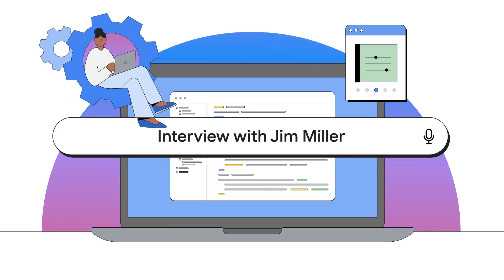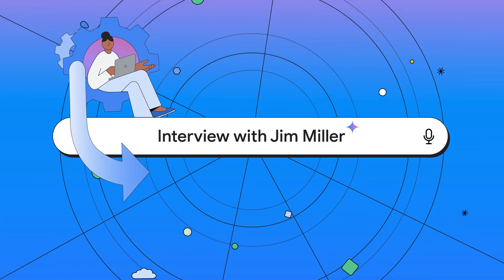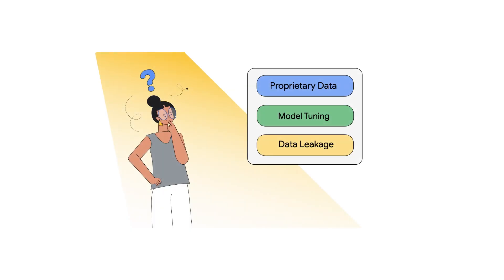Now that we've explored how we can use sensitive data protection to filter our LLM's responses, let's chat with Jim Miller, a Google Cloud security architect who created this Jupyter Notebook. Jim, what challenges did you see your customers experiencing that led you to build this Jupyter Notebook? Customers were asking what happens when they use their own data to tune a foundational model, and what data leakage risk exists for generative AI applications. Sensitive data protection is a cornerstone of a robust data security strategy, so naturally the next step was applying it to LLM responses.